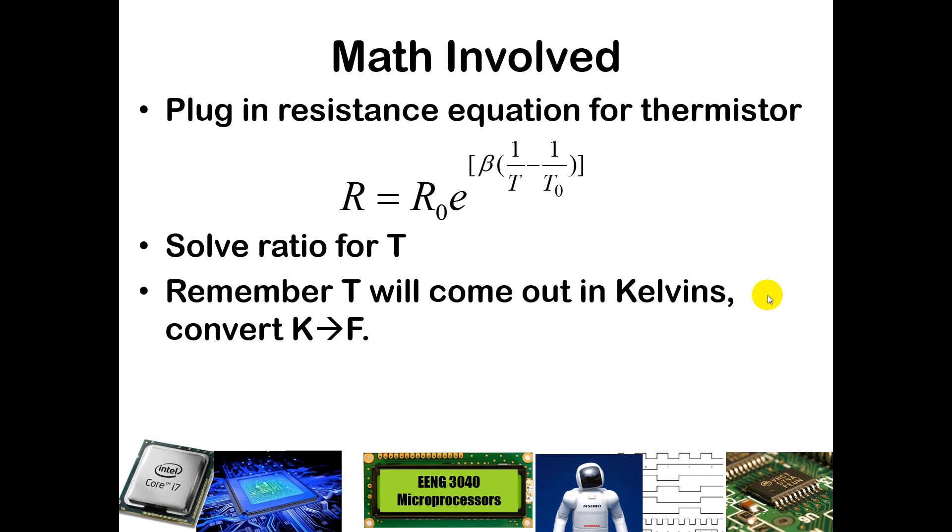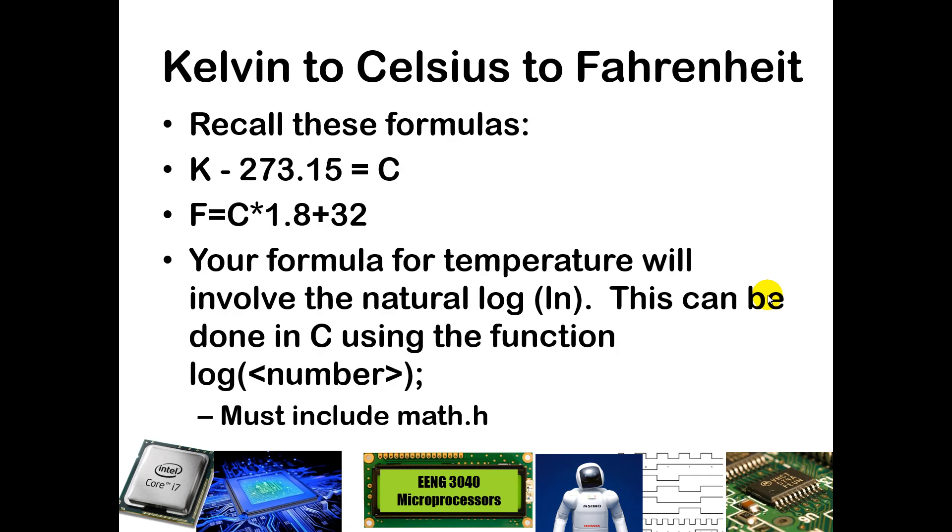Remember that T, once you solve for T in this equation, it will come out in Kelvins. So we will then go through the conversion from Kelvins to Fahrenheit. If you take away 273.15 from a Kelvin temperature, that gives you a Celsius temperature. Then if you take your Celsius temperature and multiply it by 1.8 and add 32 degrees, that is the Fahrenheit temperature. Your formula will use the Fahrenheit temperature to output onto the LCD.